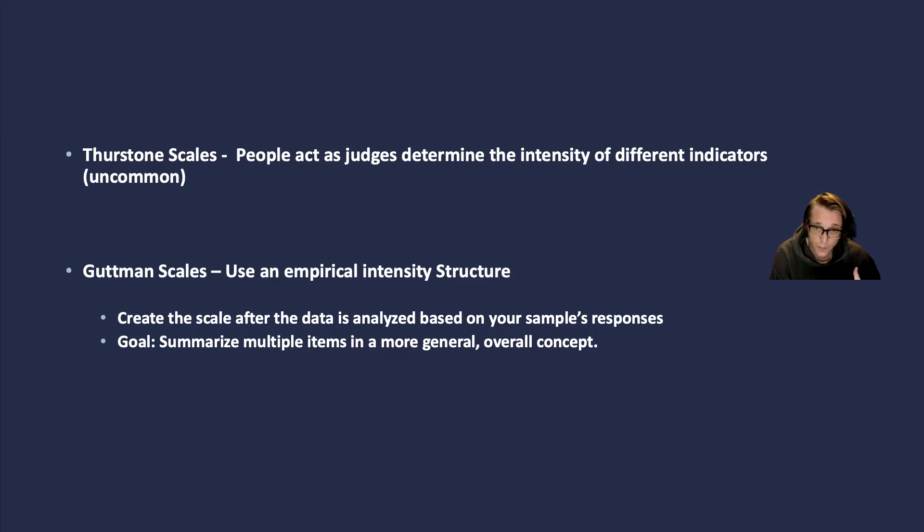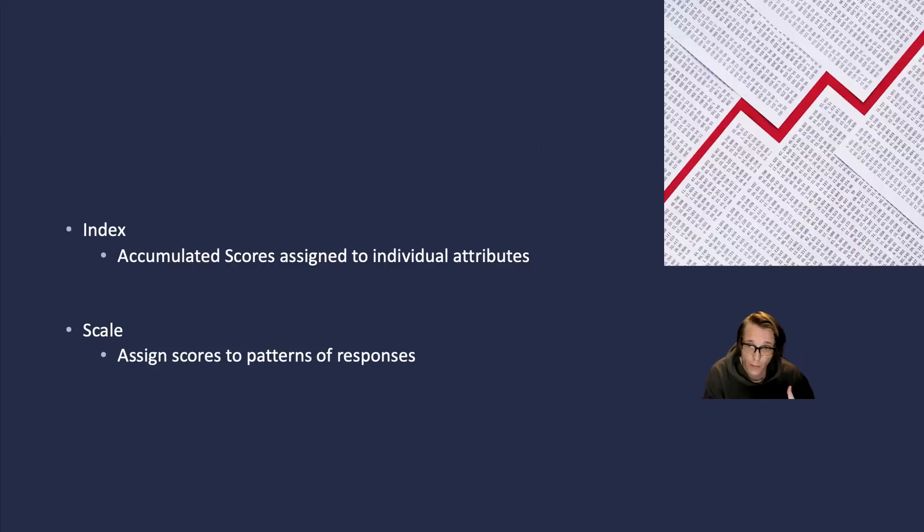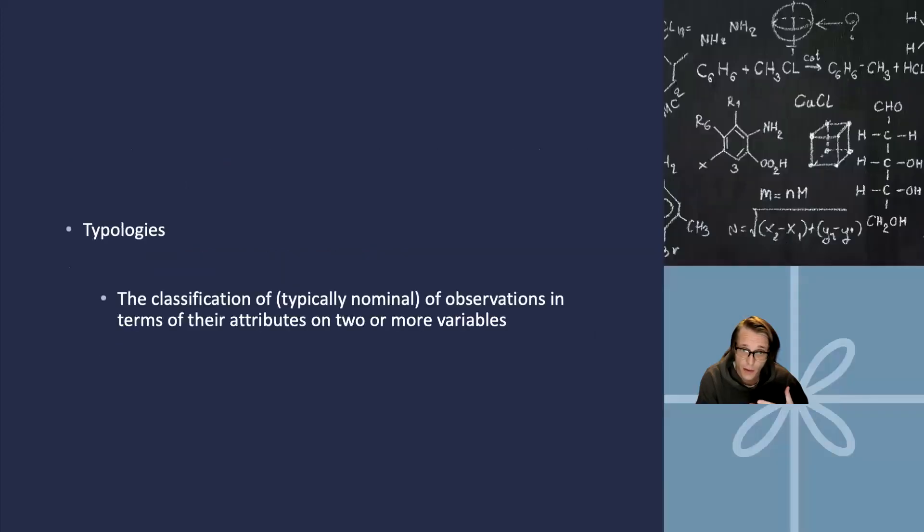How likely are you to talk to someone of a different country of origin? How likely are you to be neighborly with someone from a different country of origin? How likely are you to marry someone of a different country of origin? If you chose the last one, it is implied that you would also talk with and be neighbors too. So the Thurston scale uses judgments to determine the intensity of the different indicators, which becomes differently important. Determine the intensity of different indicators that are then used in a survey, potentially.